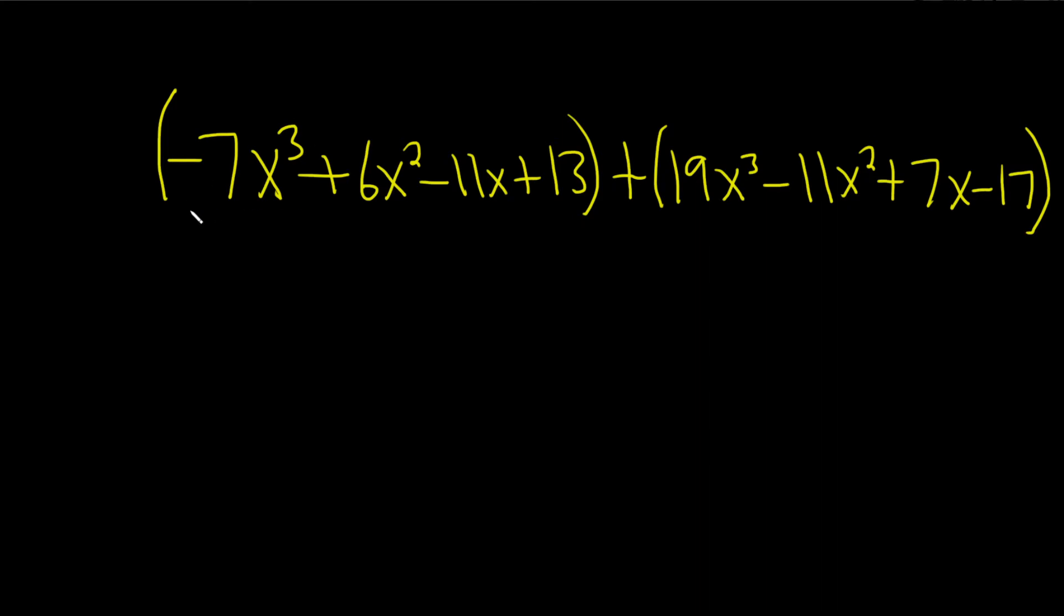Let's start by adding the x cubed terms. Negative 7x cubed plus 19x cubed is 12x cubed.